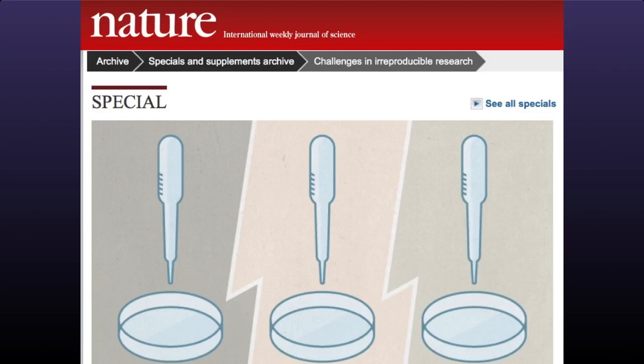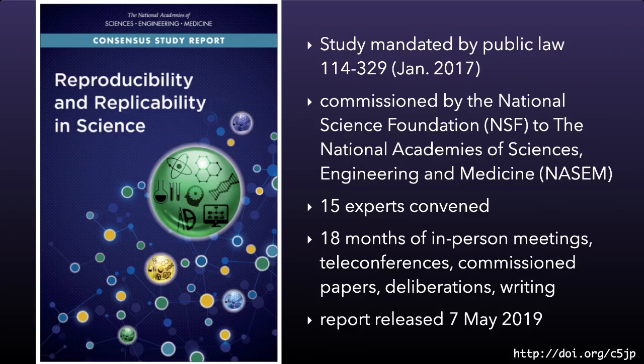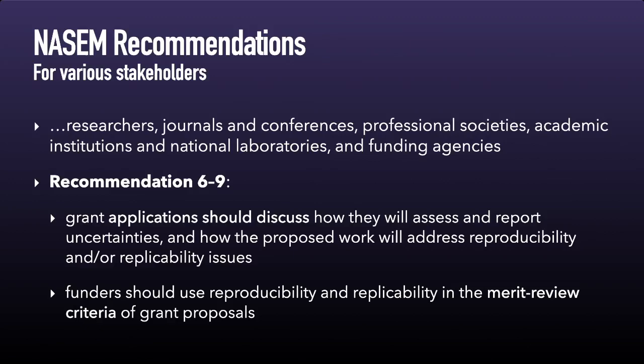And in a study mandated by Congress in January 2017 and commissioned by the NSF to the National Academies of Science, Engineering and Medicine, 15 experts — among them myself — worked for 18 months to produce a report titled Reproducibility and Replicability in Science. It defined reproducibility as obtaining consistent results using the same input data, computational steps, methods, and conditions of analysis — which may sound straightforward, but it definitely is not. The report included recommendations for various stakeholders: researchers, journals, conferences, professional societies, academic institutions, national labs, and funding agencies. A key recommendation targets the grant application process: researchers should discuss in their proposal how they will assess uncertainties and address reproducibility, and funding agencies can have immediate impact by incorporating reproducibility concerns in the merit review criteria.